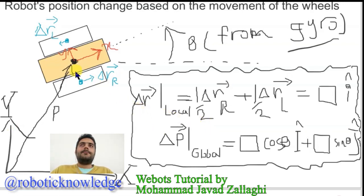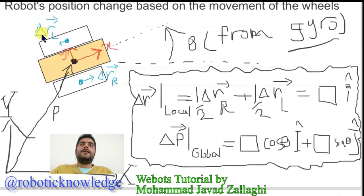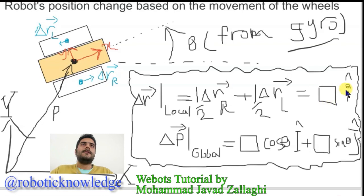So the change of position of this interesting point and the change of position of the center of the right or left wheel are equal. We have those coefficients, and from the previous slides we know that both of the yellow vectors are in this x-local direction. So we know that it's something times the unit vector of this x-local coordinate.